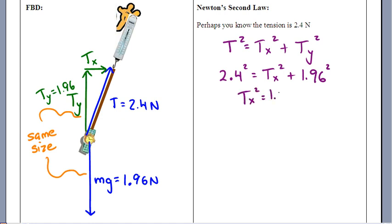Tx squared ends up being, I think, 1.9184, somewhere in there. And then Tx, after we take a square root, around 1.385 Newtons.